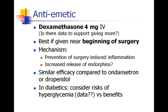There's not a lot of data to support giving more than 4 mg IV if all you're doing is trying to prevent postoperative nausea and vomiting. The mechanism of dexamethasone as an anti-emetic is unclear — it may have some role in surgery-induced inflammation or perhaps increase the release of endorphins. It is as effective as some of the more well-known anti-emetic drugs like ondansetron, which is Zofran, or droperidol. In diabetics, blood sugar will go up, so we need to consider the risks of hyperglycemia versus the benefits. Recent literature suggests this hyperglycemia may be transient and may not have any real effect on long-term outcomes, suggesting it's okay to give dexamethasone even to a diabetic.